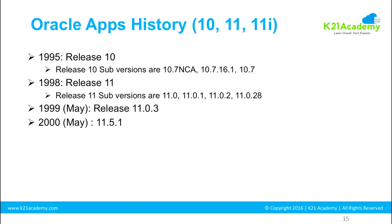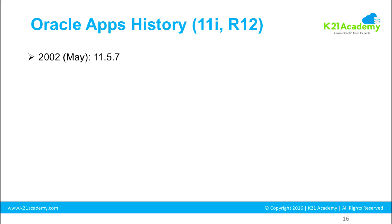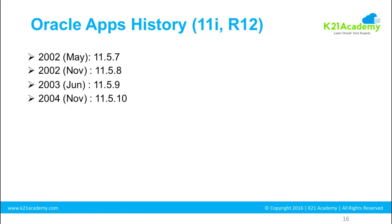In May 2000, Oracle released 11.5.1, the first release marked as 11i — where 'i' stands for internet. Subsequent releases 11.5.2 through 11.5.6 ranged from 2000 to 2002. Then came 11.5.7, 11.5.8, 11.5.9, 11.5.10, and 11.5.10.2, which is the terminal release of 11i. After 11.5.10.2, there were no more releases in the 11i line.